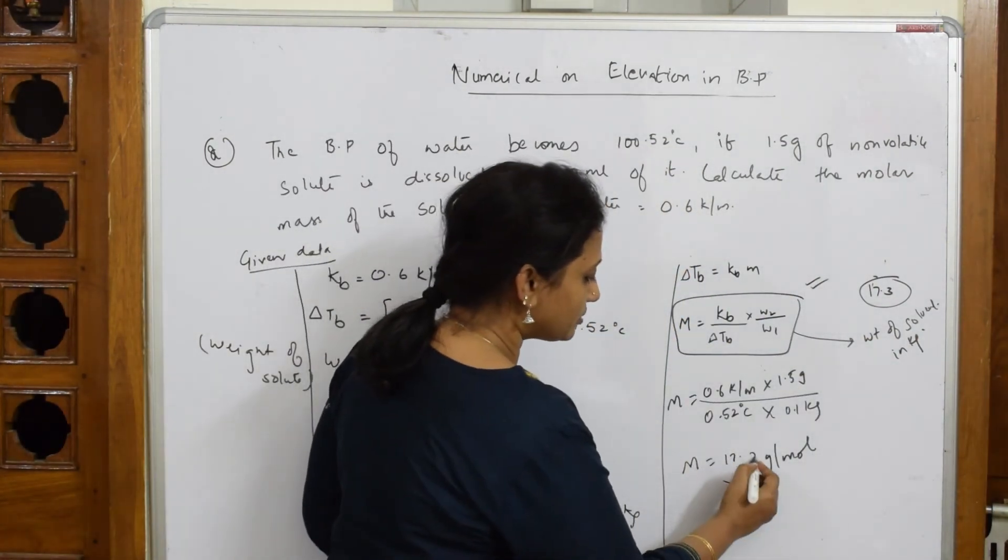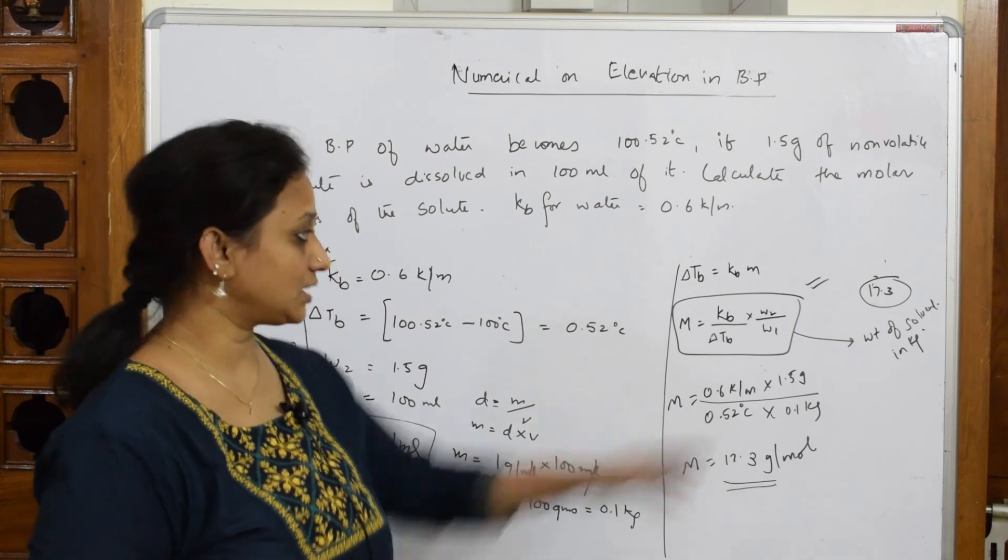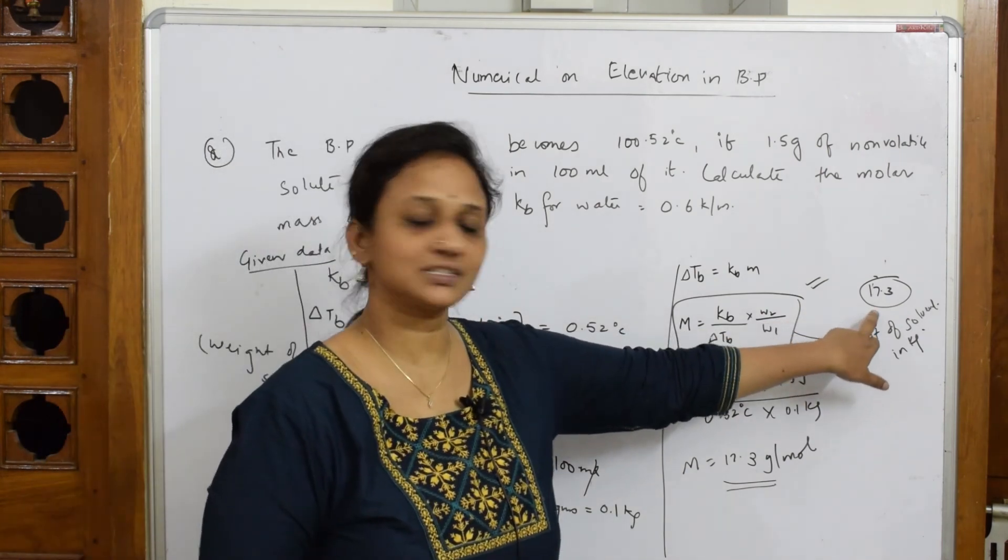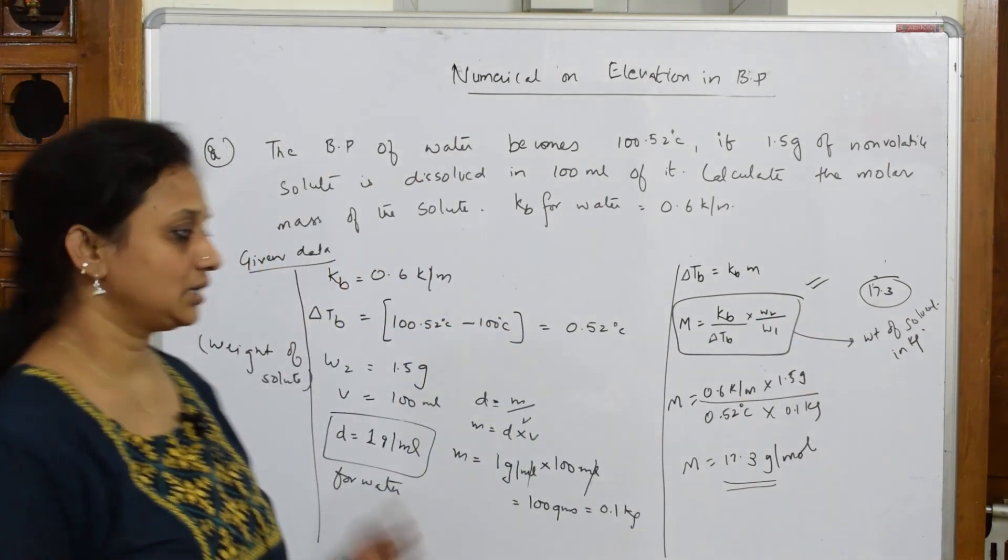17.3 sorry, I am sorry, 17.3 gram per mol. This is your answer. I have already solved it. I have given the answer here, 17.3 gram per mol. So important thing.